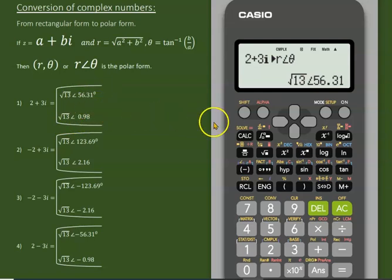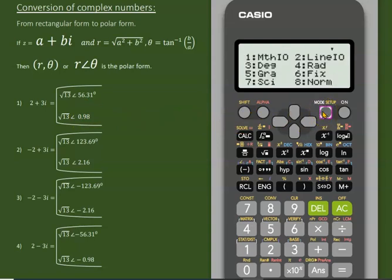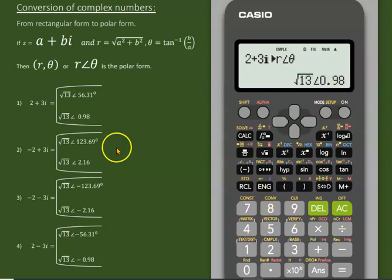So here we are. If you want this angle or argument in the radian form, just go to shift, then setup, and radian. Click radian which comes under 4, and it comes 0.98 radian. I have fixed already my calculator to two decimal places. Let's do another example from the third quadrant.